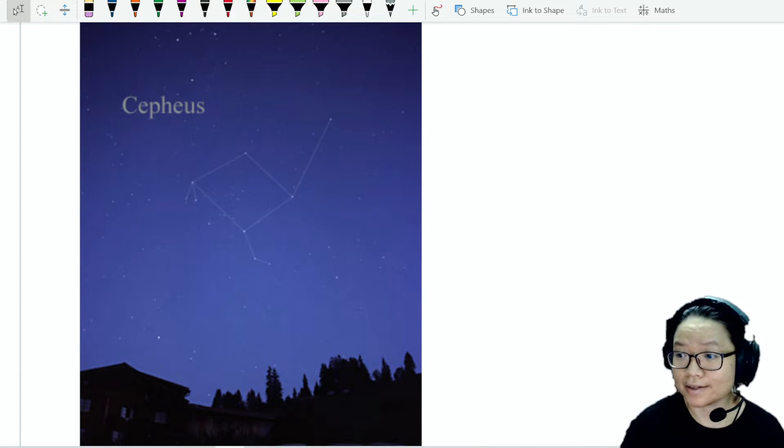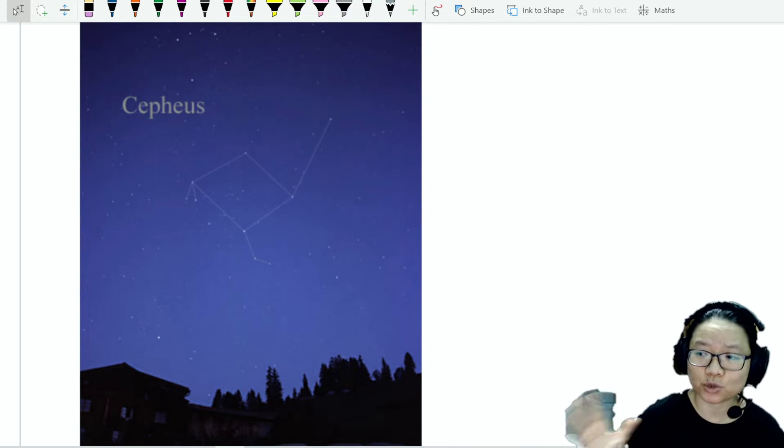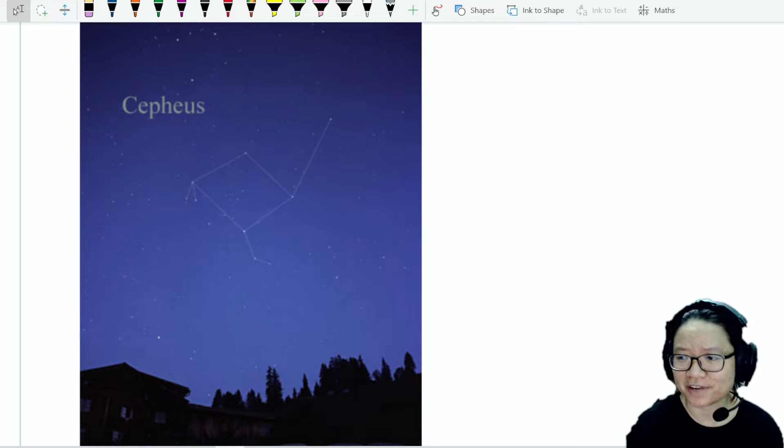Cepheid variable stars are named after the constellation Cepheus. If you have access to a long exposure, good quality camera and you find yourself in the right place, when you look up you can actually see the constellation of Cepheus and how it looks like.